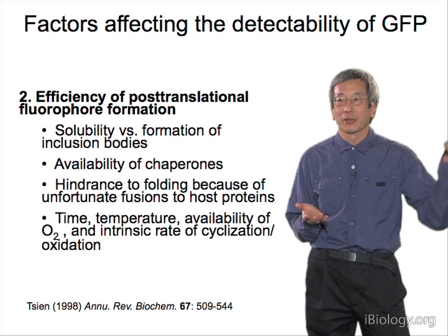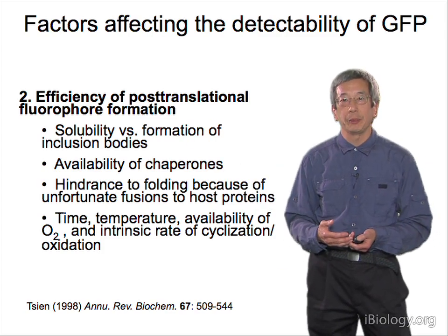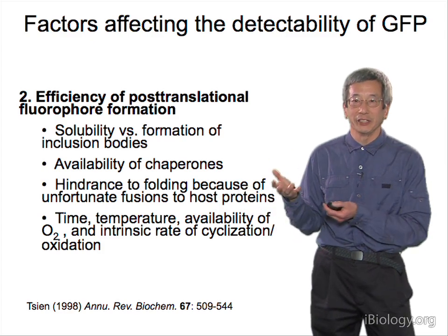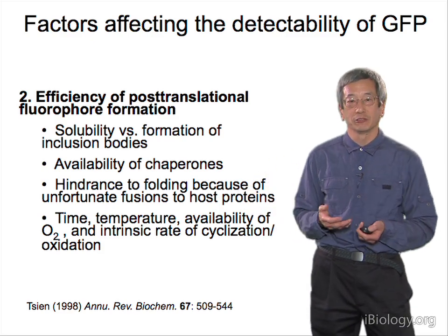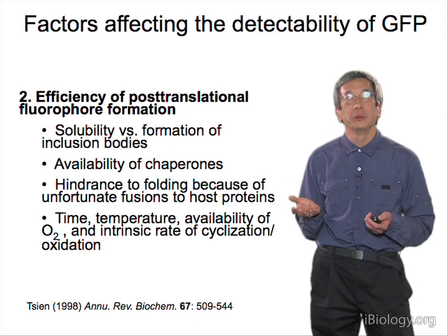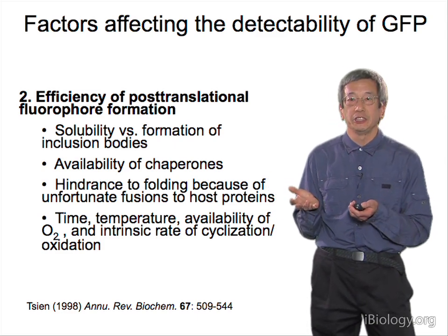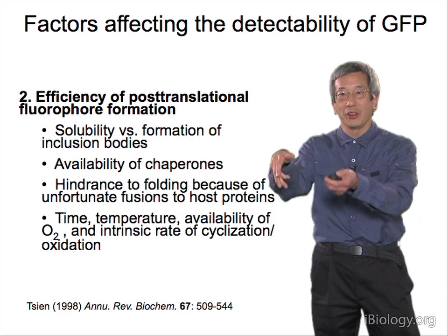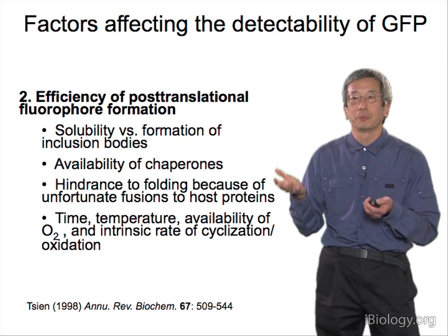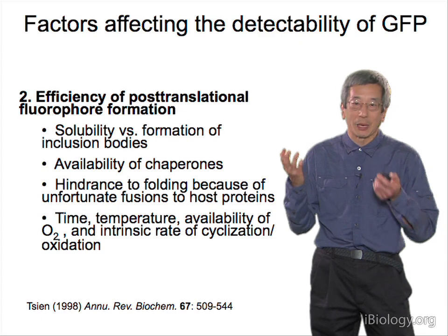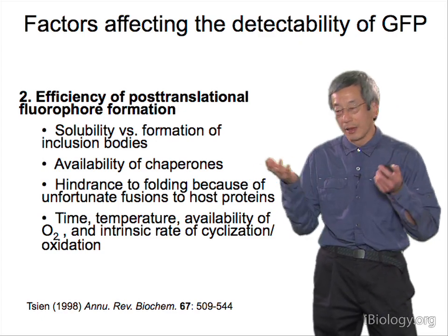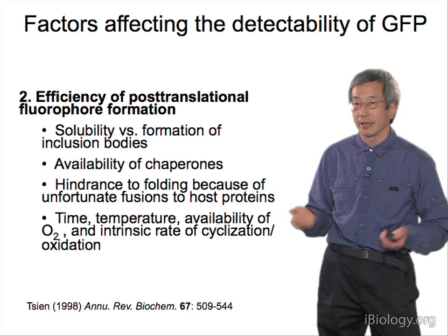Commonly, if the N-terminus doesn't work, try the C-terminus — GFP can work at either end in general, but for any given protein you don't know until you try. If both termini fail, you can even try inserting GFP within a loop or a comfortable spot in the host protein. Sometimes that solves the problem. At this stage you're doing a lot of trial and error, but that's what it may take.